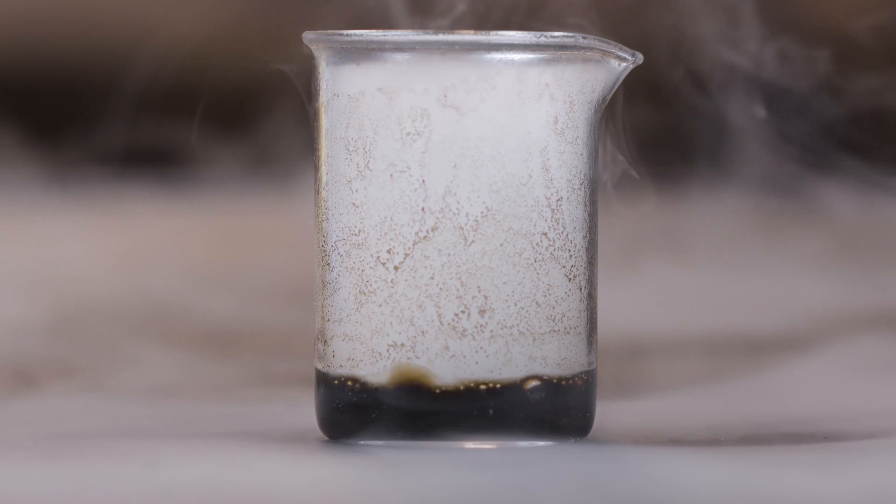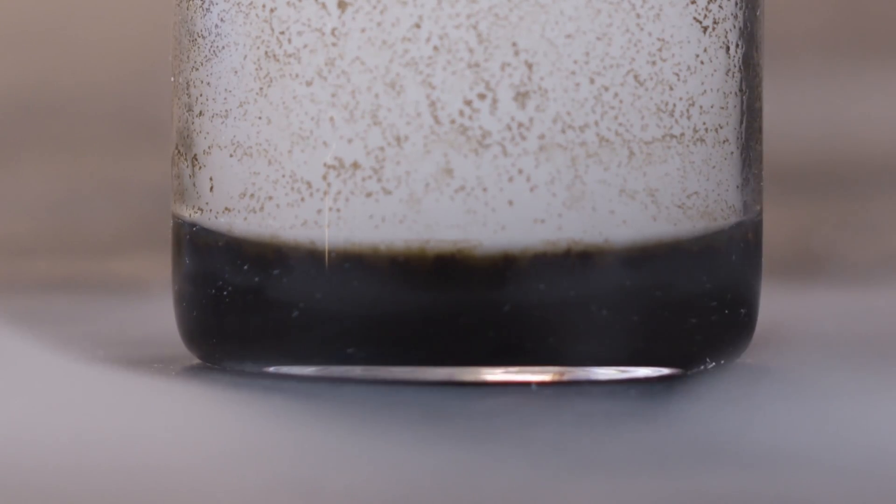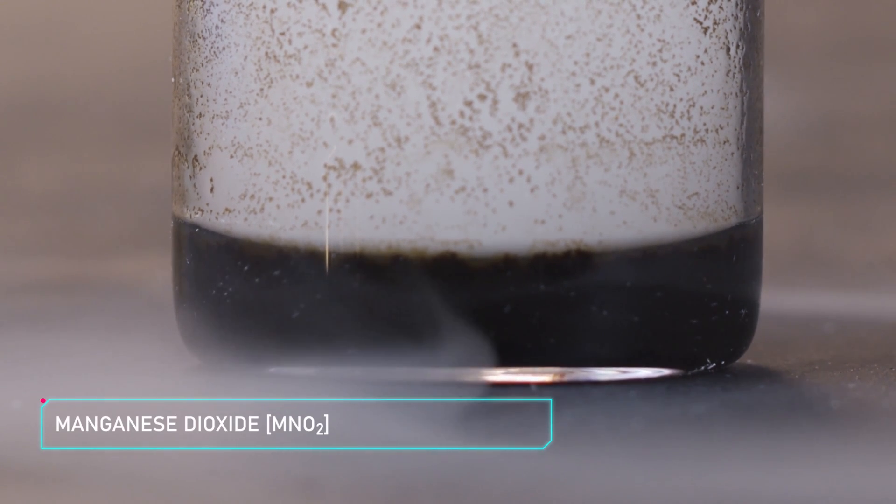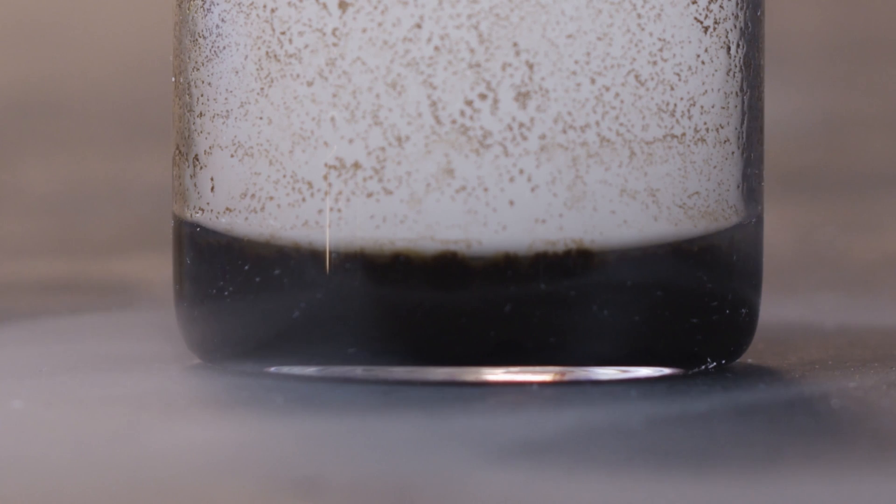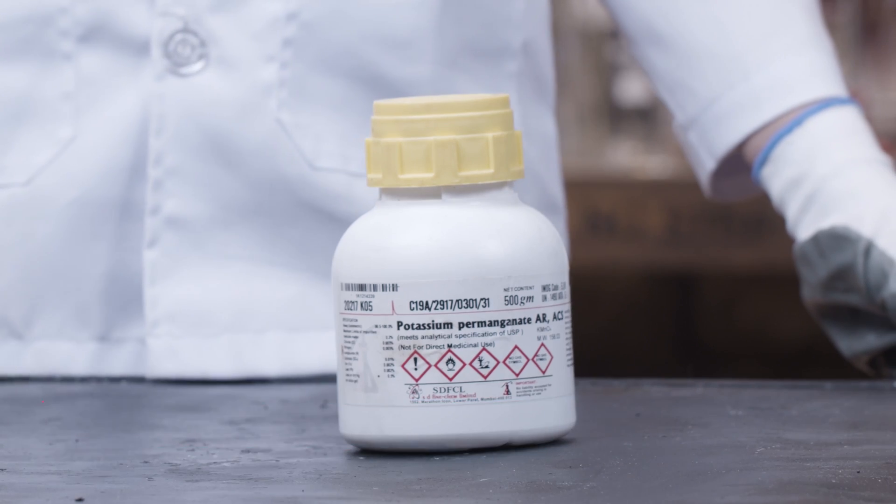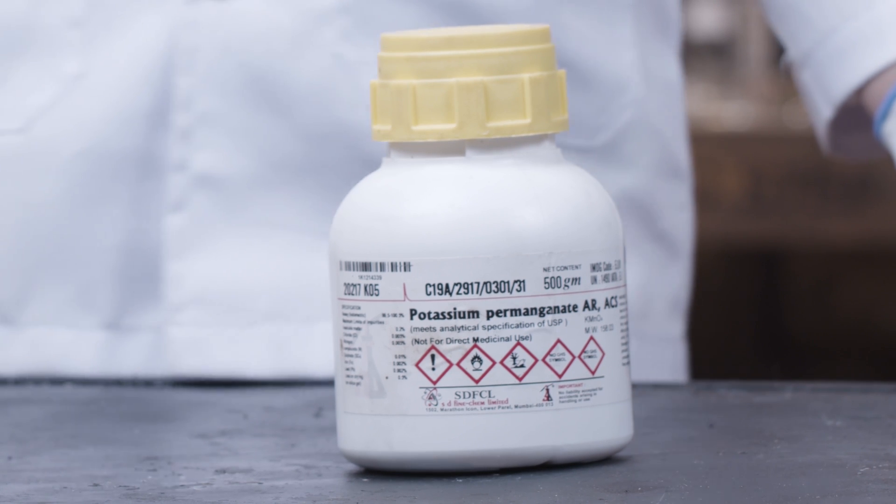So now that the vapor has settled, the black stuff you see at the bottom of the beaker—yep, that is manganese dioxide guys. I literally still have more potassium permanganate and this can mean only one thing. We are just getting this show on the road.